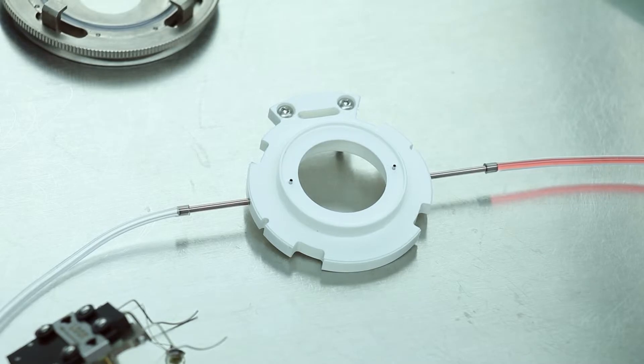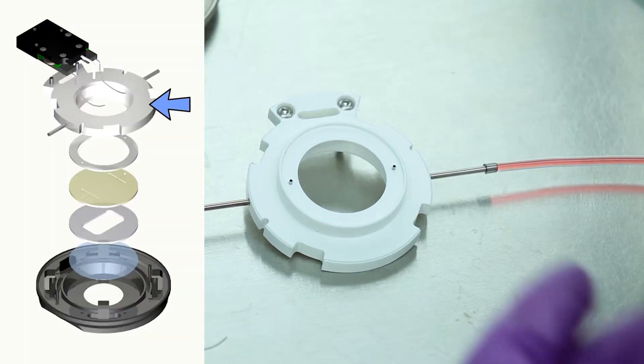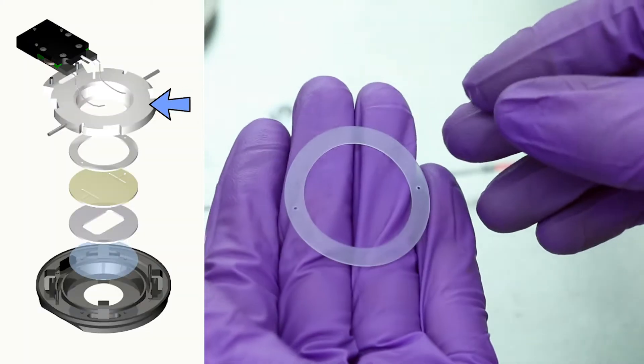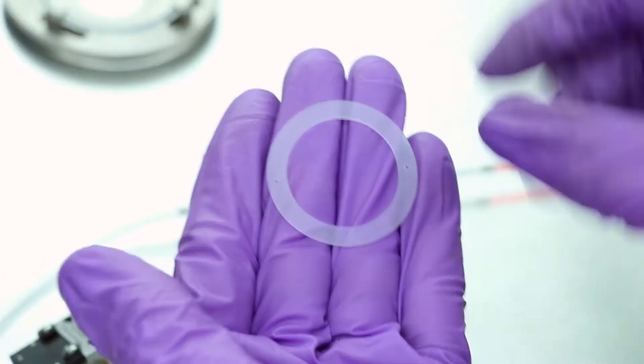To load the FCS2 chamber, first take the white top and place upside down. Next, take the upper perfusion gasket and align the holes over the perfusion ports on the top.